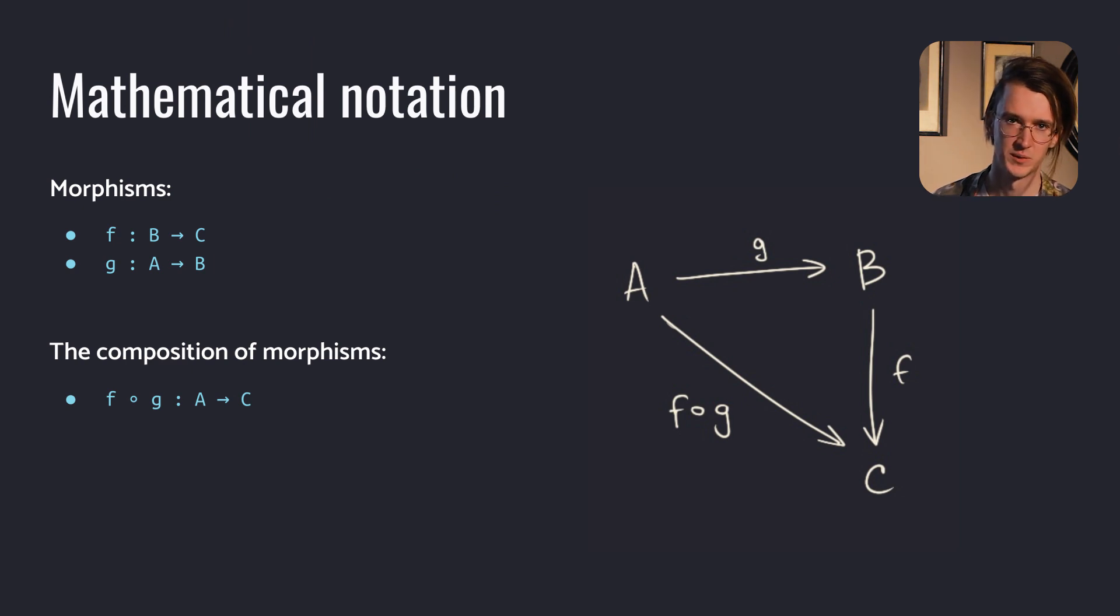F is a morphism with a source object B and the target object C. If we have a morphism G from A to B and F from B to C, they can be composed to make a composition from A to C.